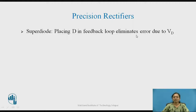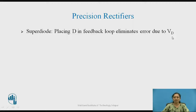With the super diode, we get rectification of signals less than 0.7 volt, which is not possible with a normal diode, eliminating error in the output signal. It can give rectification of the signal down to VD divided by the open loop gain AOL of the op-amp. Even when the signal is in the millivolt or microvolt range, we can rectify that signal. Therefore, this is called a precision rectifier.